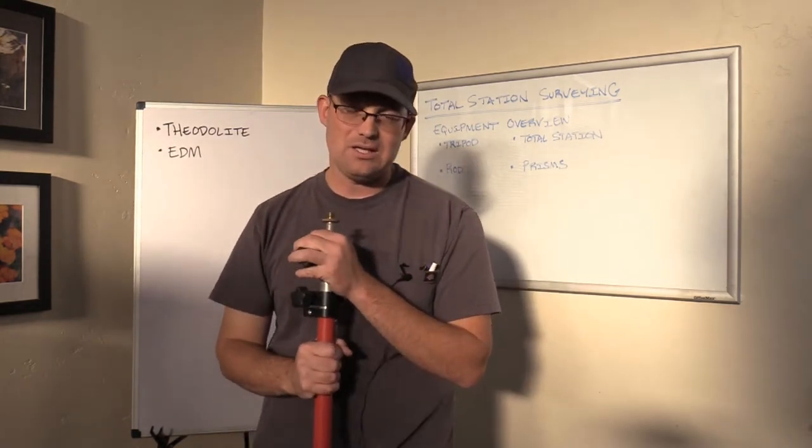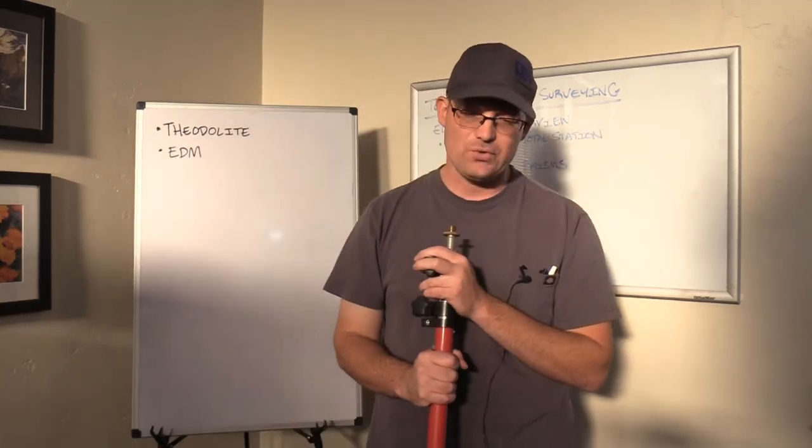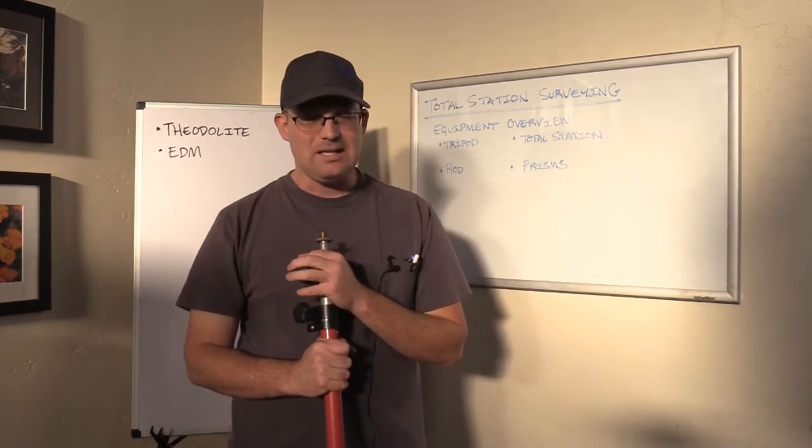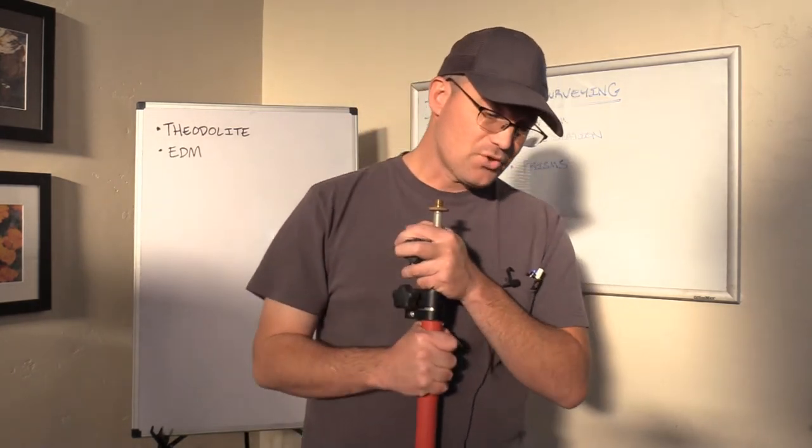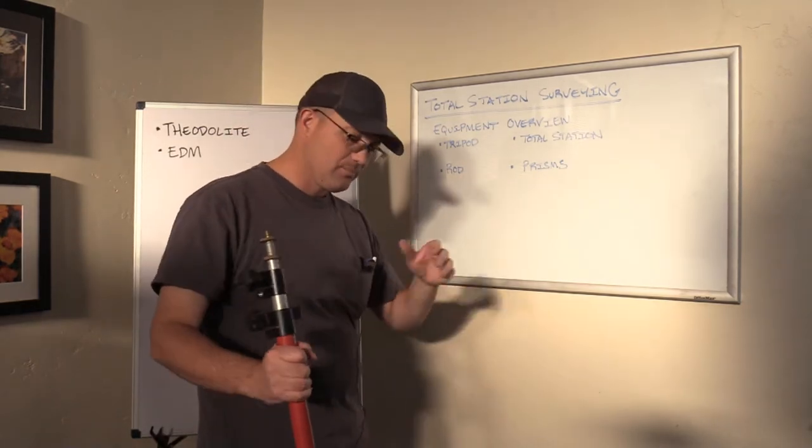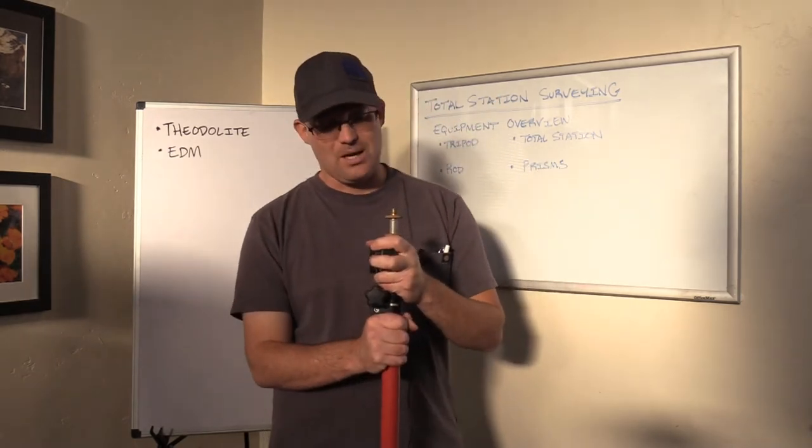In the last video that we did, we showed you what a total station looked like and a tripod for a total station. That's just one part of the equipment that you need. The other part of the equipment that you need for total station surveys is a rod and a prism, unless you're doing a reflectorless EDM survey, which we can talk about in a minute.